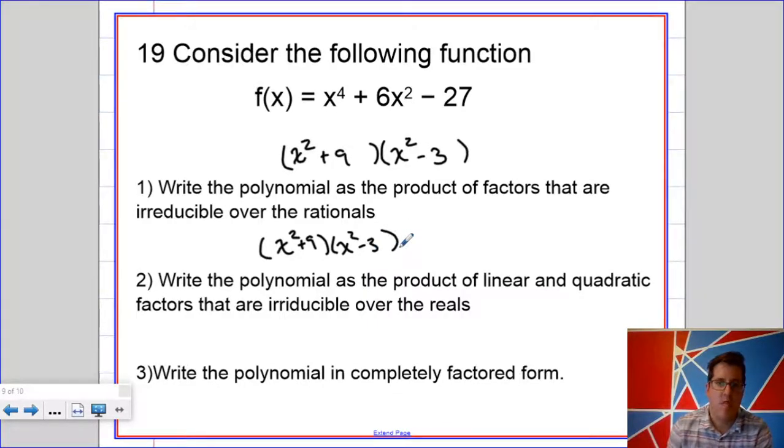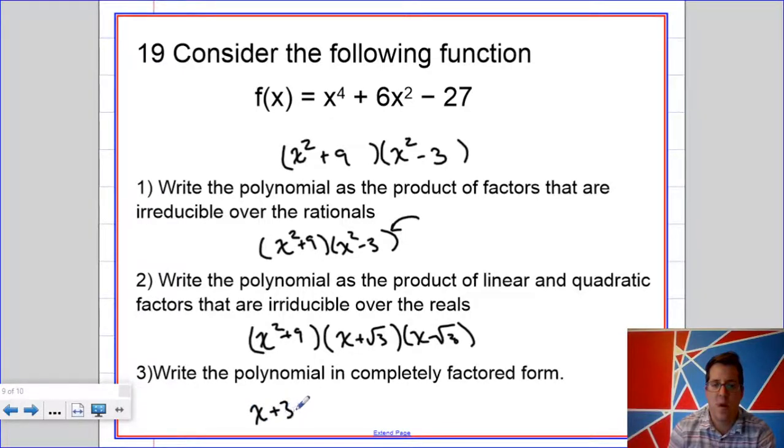Now, linear and quadratic factors that are irreducible over the reals. This means, what have real zeros? Well, this is going to have a real zero. Well, two of them, really. So I'm going to break that up. The x squared plus 9 is going to stay the same. But this is going to become x plus root 3 times x minus root 3. And then finally, just like in the last problem, as x plus 3i times x minus 3i times x plus root 3 times x minus root 3.